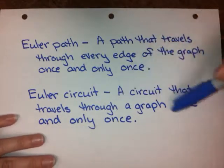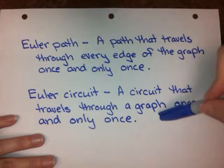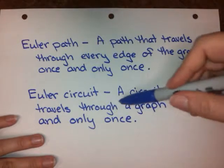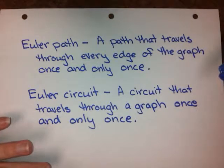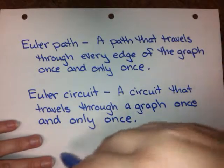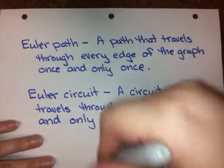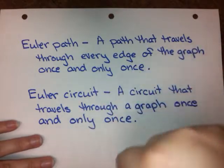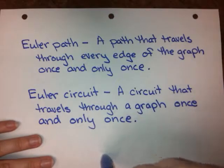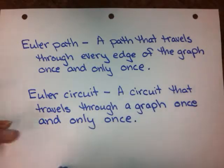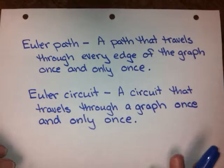An Euler circuit is the same idea, except it's a circuit that travels through the graph once and only once — hitting every single edge once and only once — but it's going to start at the same vertex that it stops at.